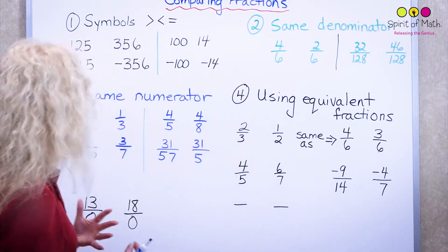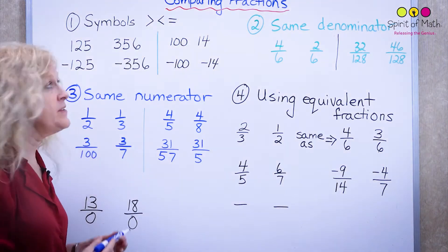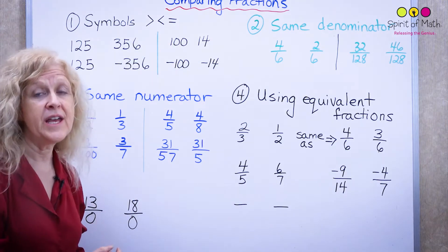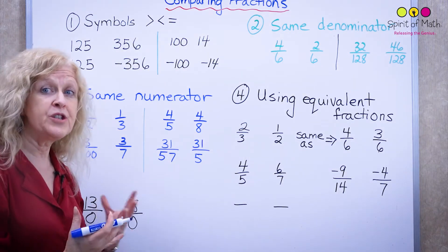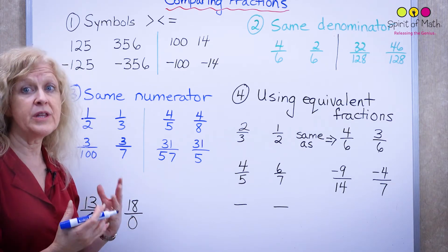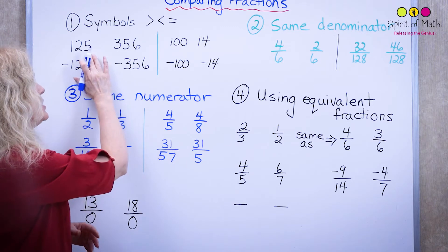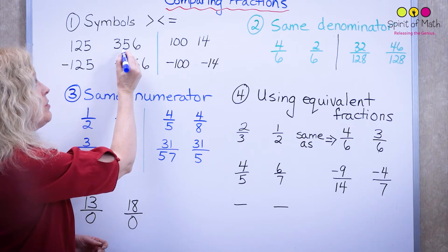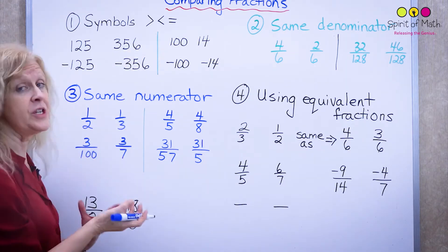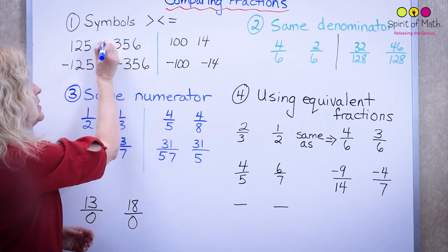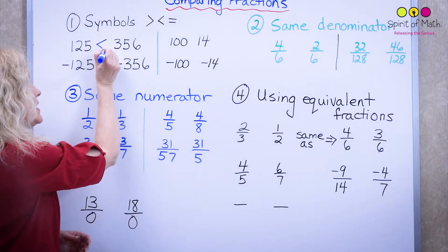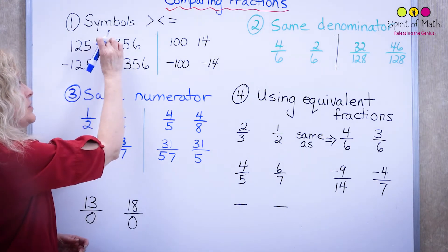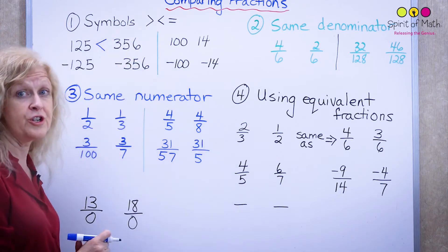Let's look at the symbols. You have greater than, you have less than, and you have an equal sign. So how do you remember which way to point them? Let's start with an easy number: 125 compared to 356. Well, you know that 356 is larger than 125. So you put this symbol so that it opens up to the larger number — it points to the smaller number on one side and to the larger number on the other.